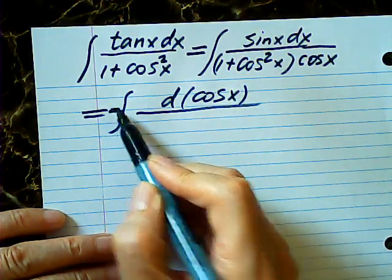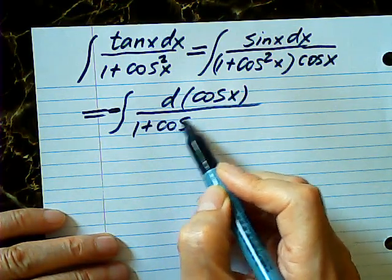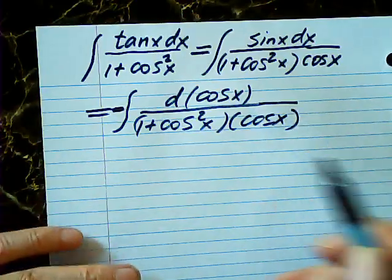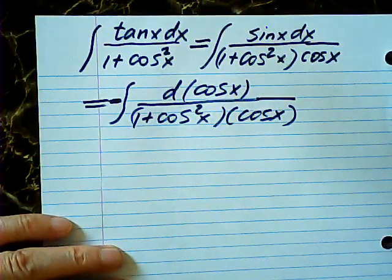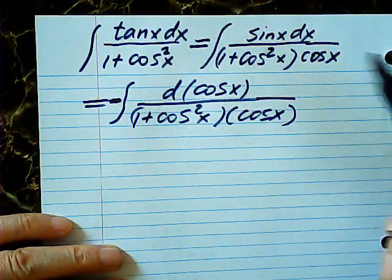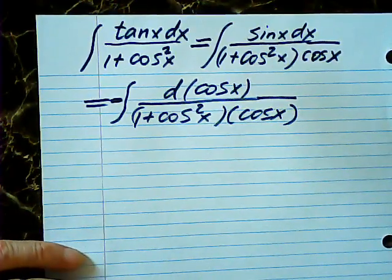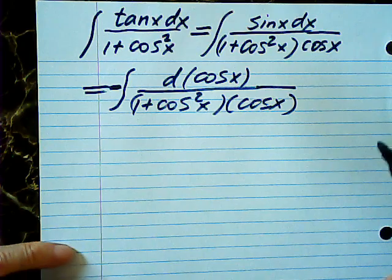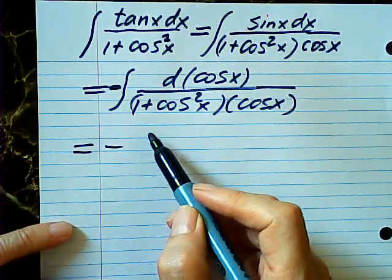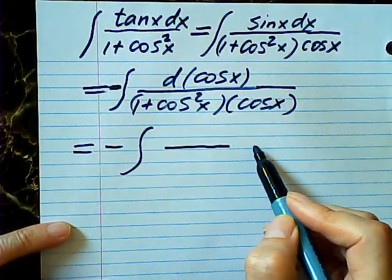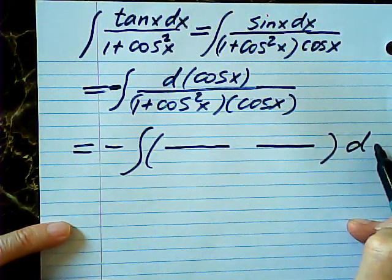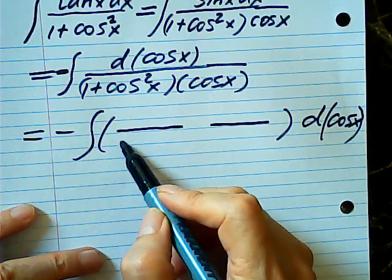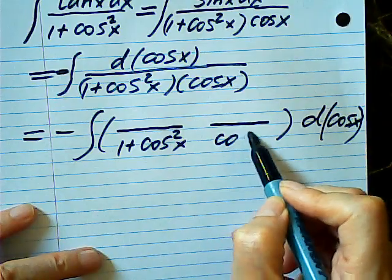Then I change the numerator into the derivative of cosine — it's negative, so I leave the negative outside. Then this is 1 plus cosine squared times cosine x. So now I change the game into cosine. Instead of integrating with respect to x, I'm integrating with respect to cosine. So this is more or less like 1 over something squared times something, which we can use partial fractions. So this is equal to the integral using partial fractions d(cosine x), and this is 1 plus cosine squared x over cosine squared x.